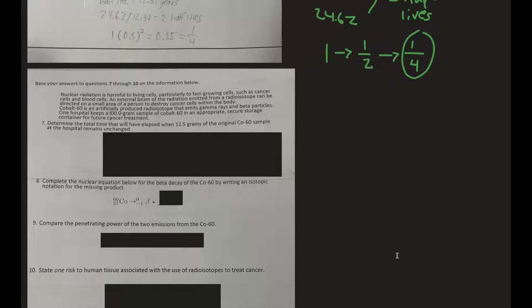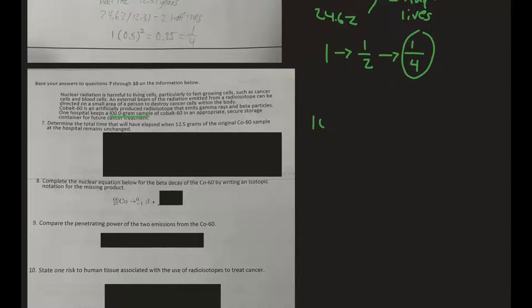Number seven: determine the total amount of time elapsed when 12.5 grams of the original cobalt-60 sample remains. The hospital keeps a 100-gram sample. We want to know the total time elapsed when it reaches 12.5 grams.